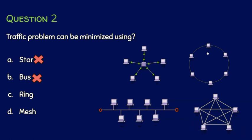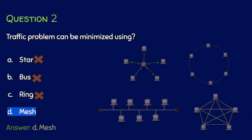In mesh topology, every pair of nodes has a separate, dedicated line or dedicated channel. Since every pair of nodes has a dedicated link, there is no traffic problem. If one node wants to send data to another, it uses that dedicated line exclusively for those two nodes. Therefore, the answer is: traffic problems can be minimized using mesh topology.